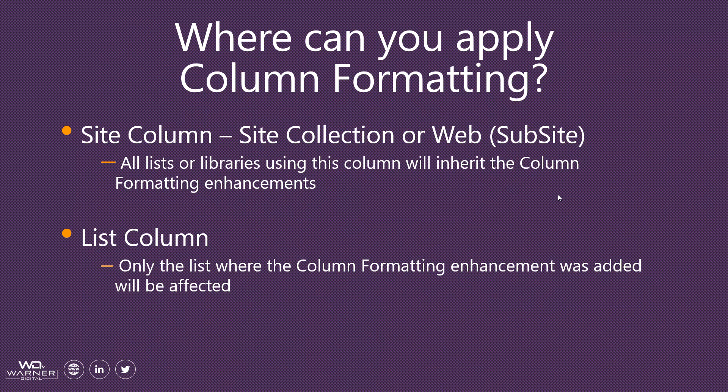Where can you apply column formatting? There are two primary areas. First, in site columns at the site collection or web level. You can edit the site column within the site collection, and then any list that uses that site column will inherit the column formatting JSON you've added. Everywhere you create a new list and add that site column, or associate it to a content type, will inherit that column formatting experience.